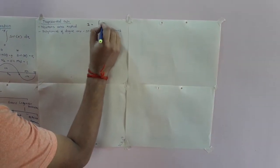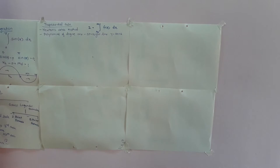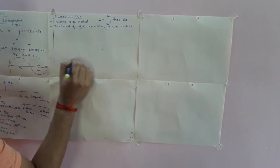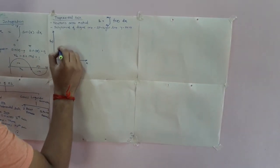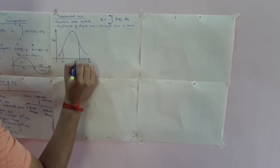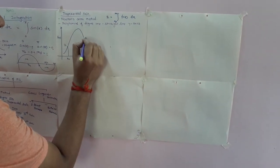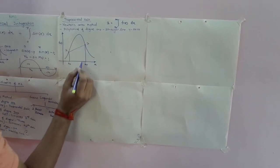Suppose we have to evaluate the integral I = ∫f(x)dx with limits from x0 to xn. Now suppose I have plotted the graph of x versus f(x). The curve has limits from x0 to xn. In the trapezoidal rule, the corresponding points give y0 and yn, with this point being (x0, y0) and this point being (xn, yn).